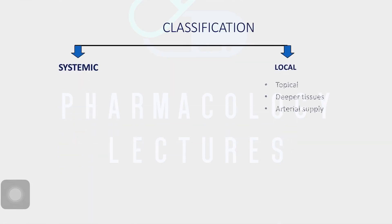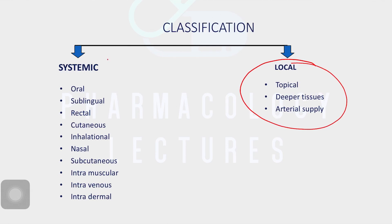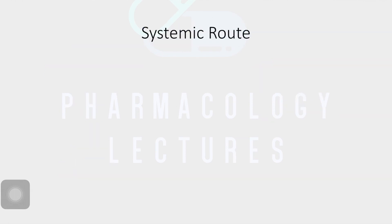We just saw the classifications. I am reminding you: local routes and systemic routes of classifications — there are two main important routes. We will discuss all these important routes in detail with their advantages and disadvantages. Let's first talk about the systemic route.